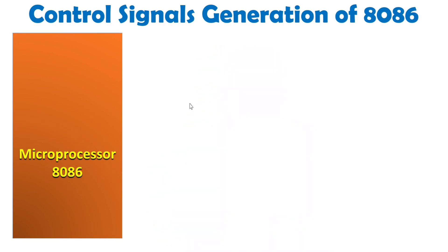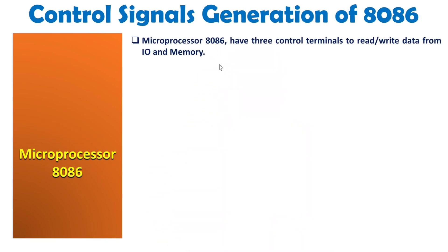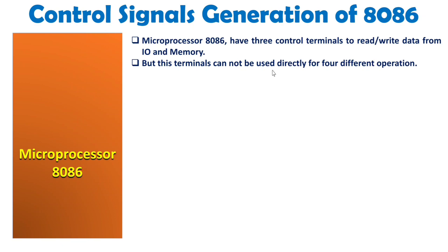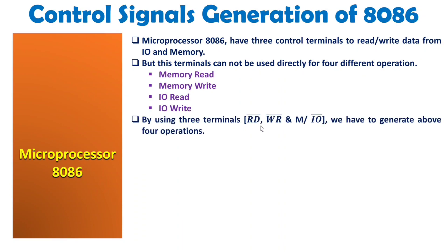8086 has 3 control terminals for Read, Write, and IO/Memory operations. We need 4 operations: Memory Read, Memory Write, IO Read, and IO Write. We will use those 3 terminals — Read bar, Write bar, and Memory/IO bar — to generate these 4 control signals.